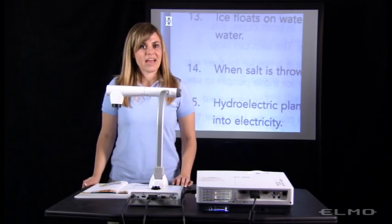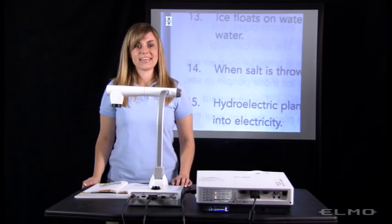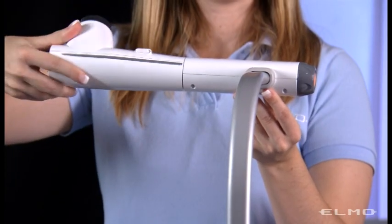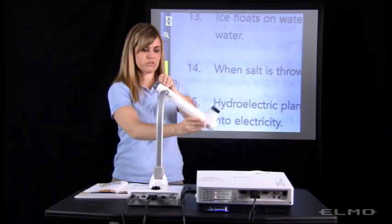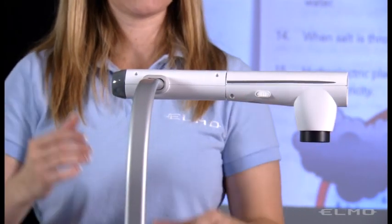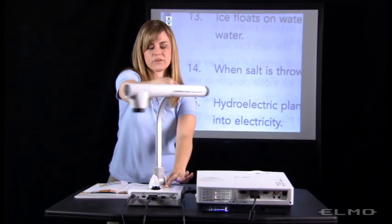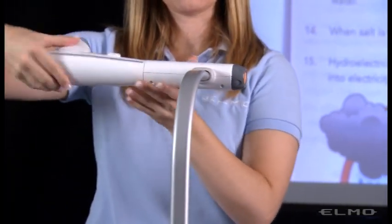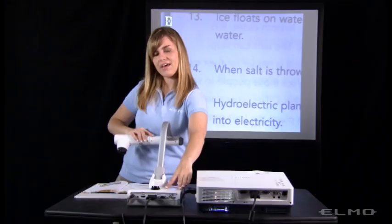The document camera can rotate to virtually any position. The camera head rotates 300 degrees. The arm rotates 180 degrees for left-handed users, and the column can rotate around 300 degrees. It can even come downward 45 degrees.